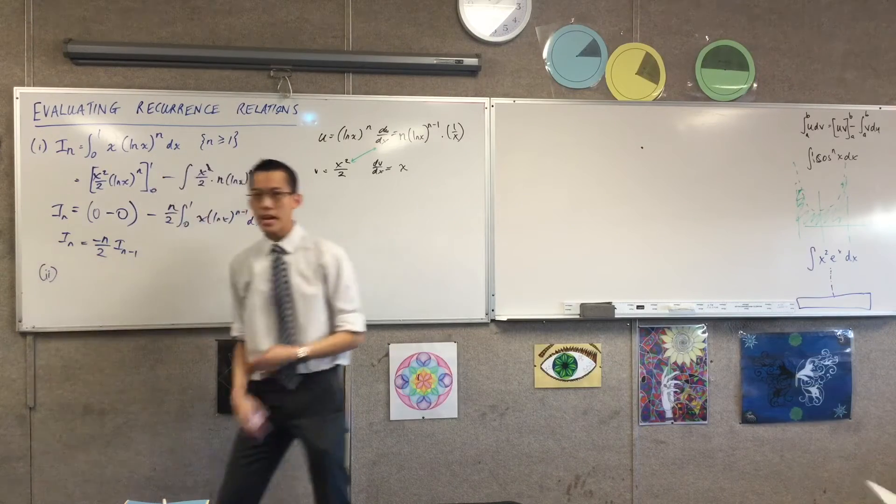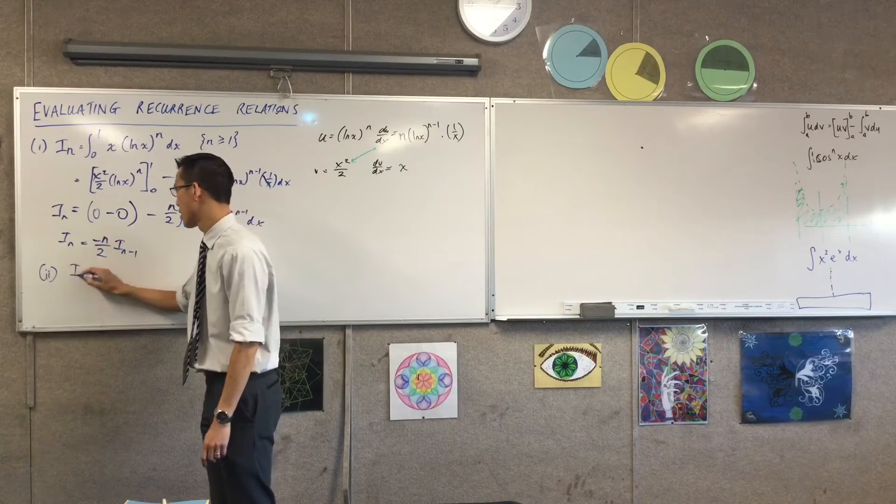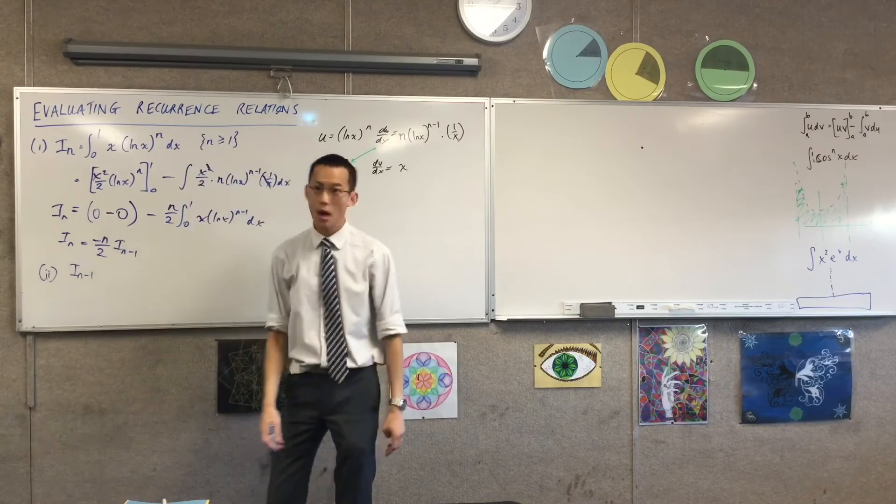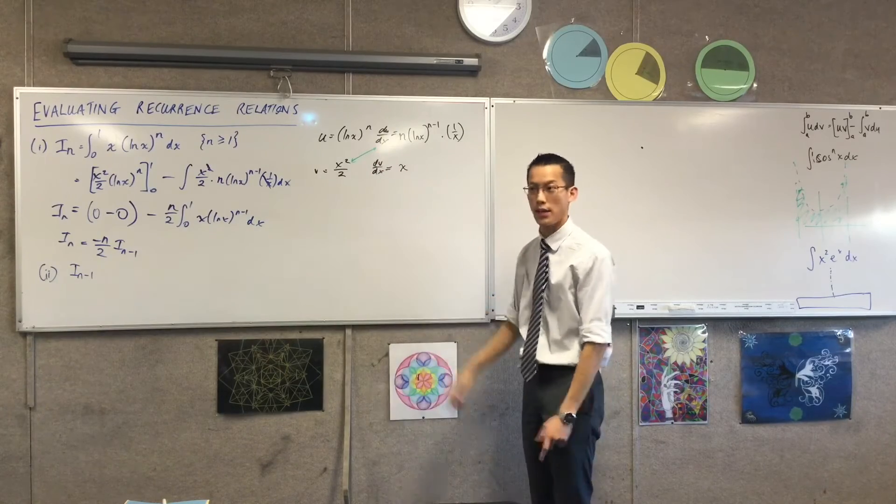So part 2. If, for example, I want to know, well, what will happen after this? What will the next step down be? I could go through this whole process again, and I could pick my u, and I could pick my dv.